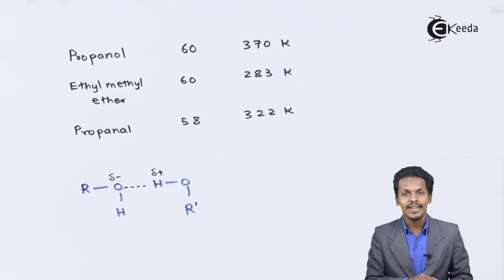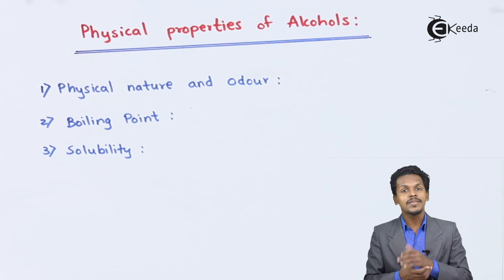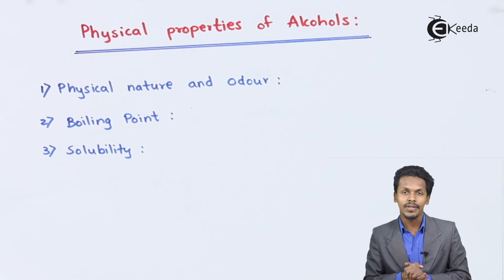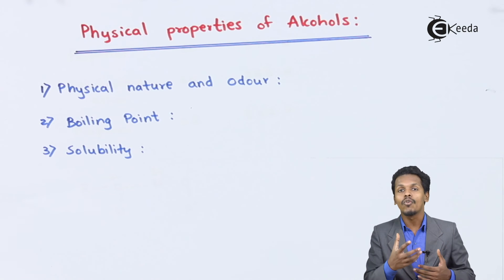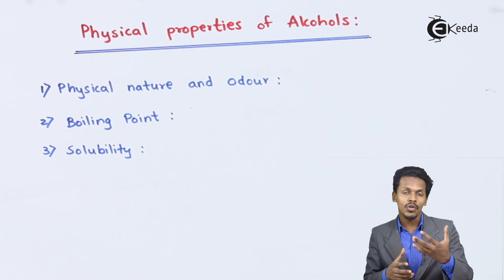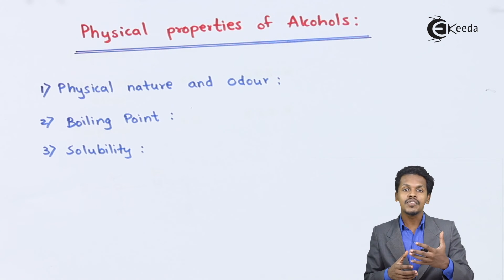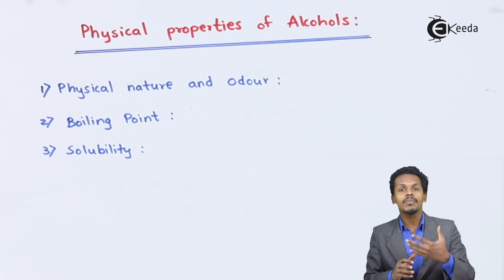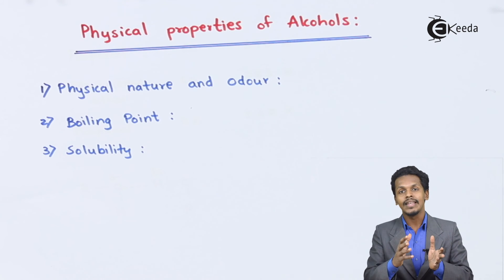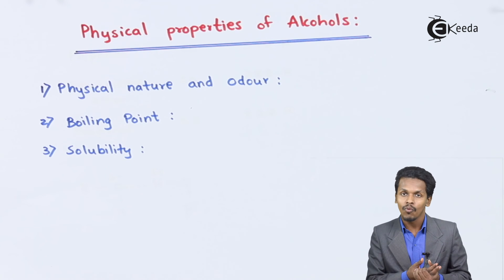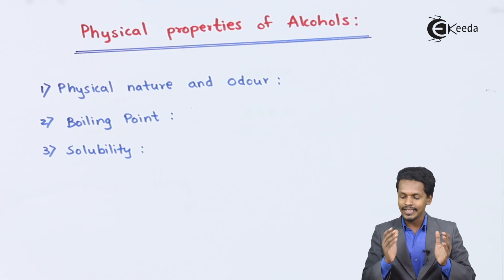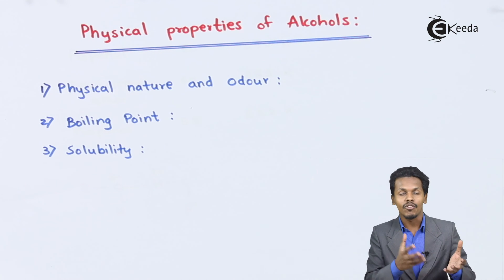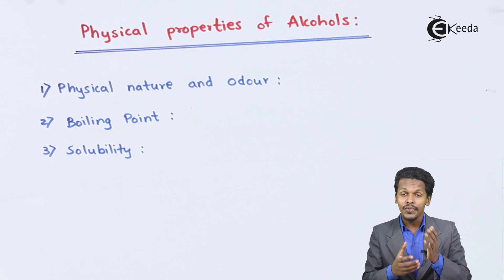Moving on to solubility — the lower members of alcohols are very much soluble in water because they form hydrogen bonding with water molecules. However, alcohols with higher molecular mass have less hydrogen bonding capacity and are not as soluble or miscible in water. Therefore, solubility is maximum for the lower members of the alcohol series.